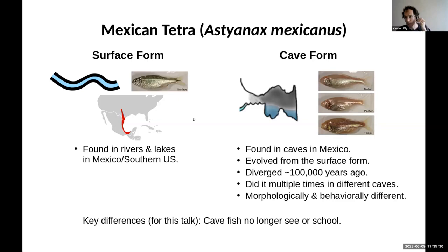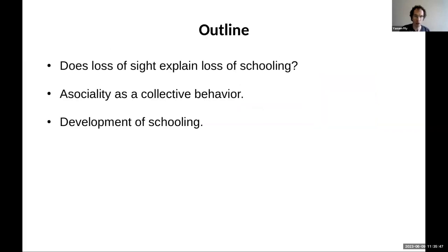There are a lot of differences between the surface form and the cave form, but the two most important for this talk are: the cave fish no longer see, because there's no light in the cave and so there's no point in having eyes anymore — and they no longer school.